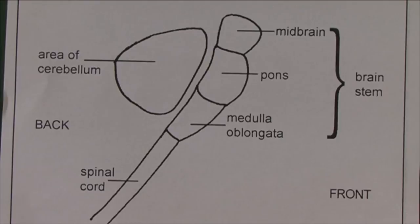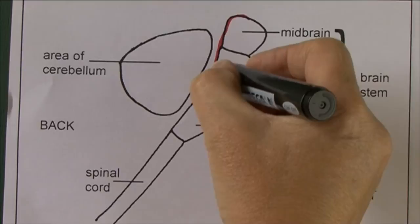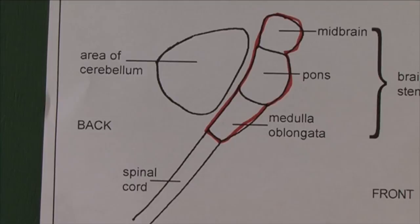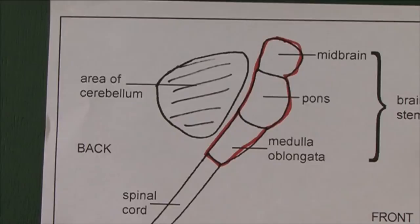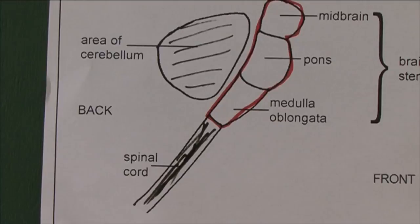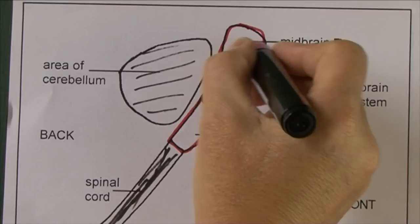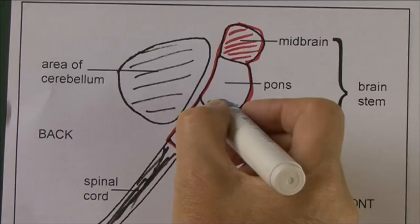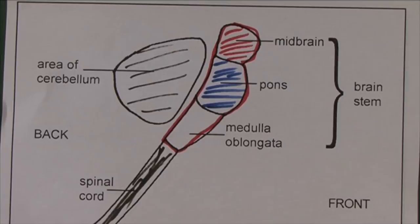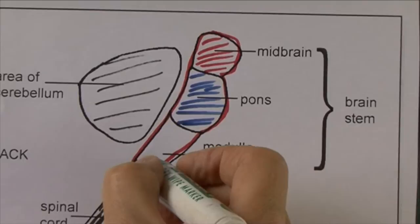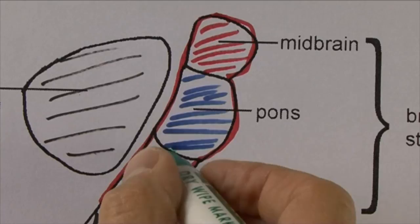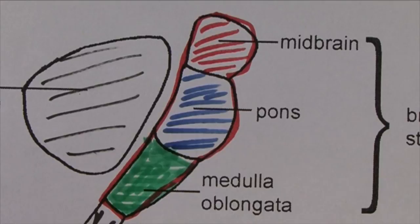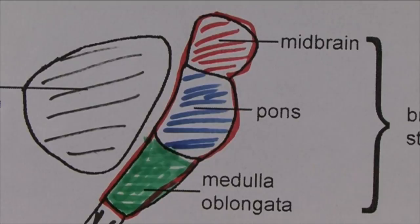Here we see a little more detail on the brain stem with the cerebellum at the back. The brain stem is in three sections: the top part is the midbrain; the middle part is the pons, which is Latin for bridge; and the lower part — containing many of the autonomic centres governing blood pressure, cardiac activity, and respiratory activity — is the medulla oblongata, which is continuous with the spinal cord.